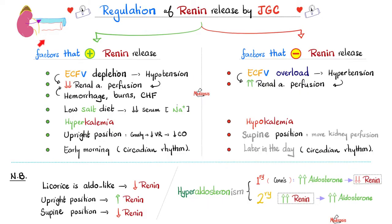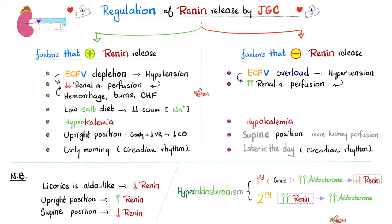Since aldosterone's job is to get rid of potassium, hyperkalemia will also trigger renin release. If you stand up, gravity pulls blood to your ankles, decreasing venous return and cardiac output; lower cardiac output means lower blood pressure, lower renal perfusion, and the kidney shouts renin. There is also a circadian (diurnal) variation — renin is higher early in the morning and decreases as the day progresses. Factors that decrease renin release are the opposites: volume overload, hypertension, high renal artery perfusion, hypokalemia, supine position, and later in the day.